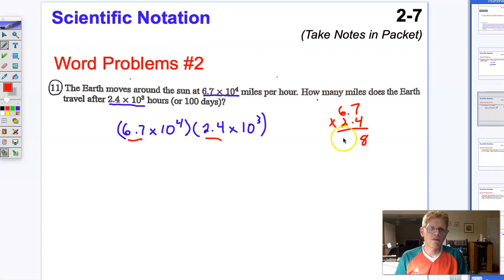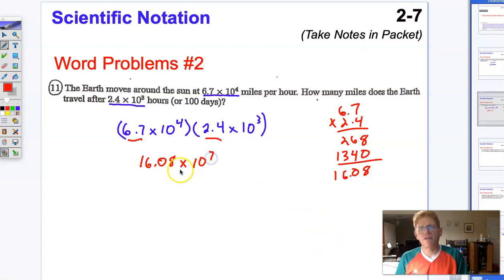6.7 times 2.4. [Working through the multiplication step by step] 28, carry the 2, 24, 25, 26. Then 0, that's 14, carry the 1, 12, 13. Add them together, gives me 1,608. I've got a decimal there. That's going to give me 16.08 × 10⁷.